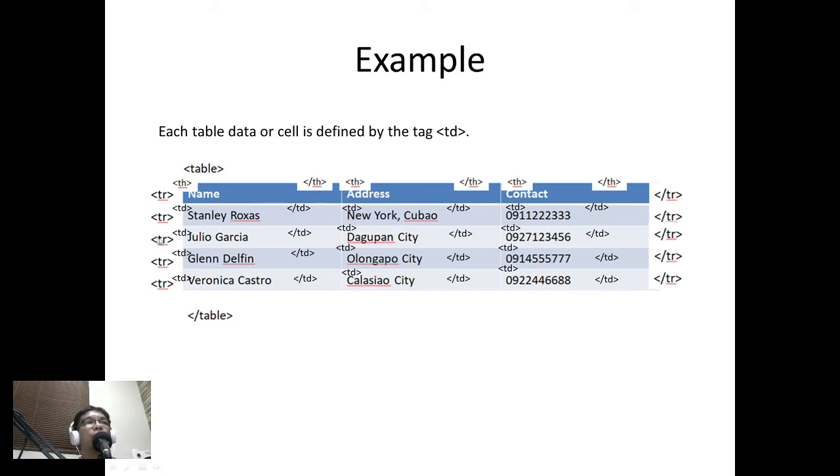On the next row, the same: TR then TD Julio Garcia TD slash TD, so TD Dugupan City slash TD, TD we have the cell phone number slash TD and then slash TR. That's the next row. Then the next row again: TR TD Glenn Delfin slash TD TD, again the cell phone number slash TD then slash TR.